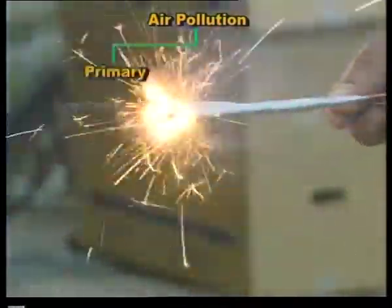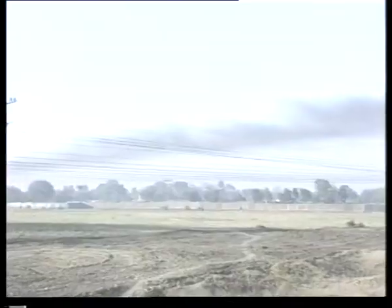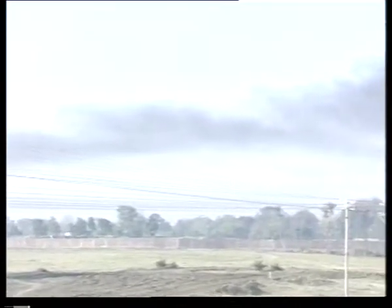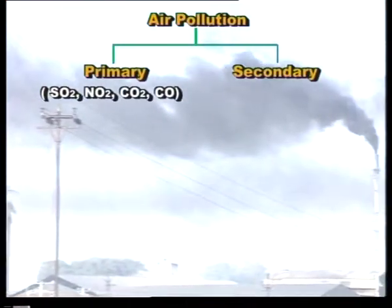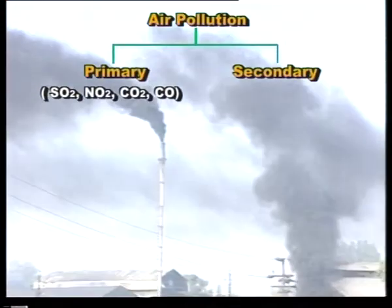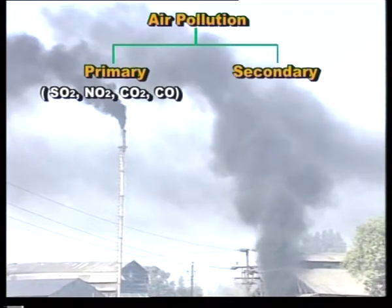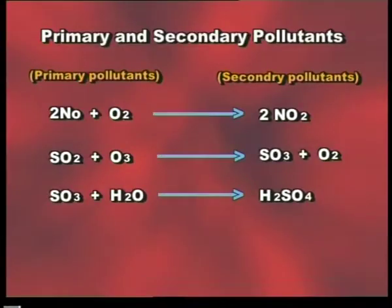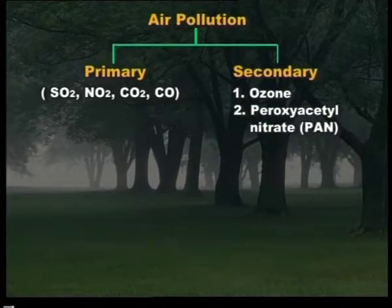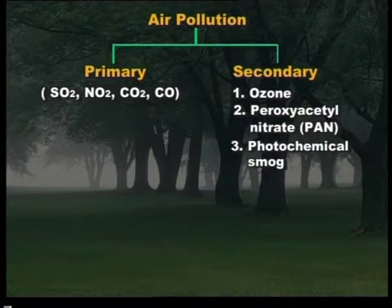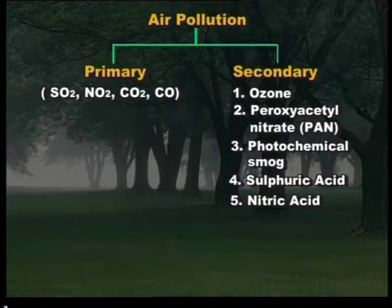According to origin, air pollutants may be classified as primary and secondary. Primary pollutants are those which are directly emitted into the atmosphere from the sources; these include sulfur dioxide, nitrogen dioxide, carbon dioxide and carbon monoxide. Secondary pollutants are derived from chemical or photochemical reactions between primary pollutants and normal atmospheric constituents. Ozone, peroxyacetyl nitrate, photochemical smog, sulfuric acid and nitric acid are common secondary air pollutants.